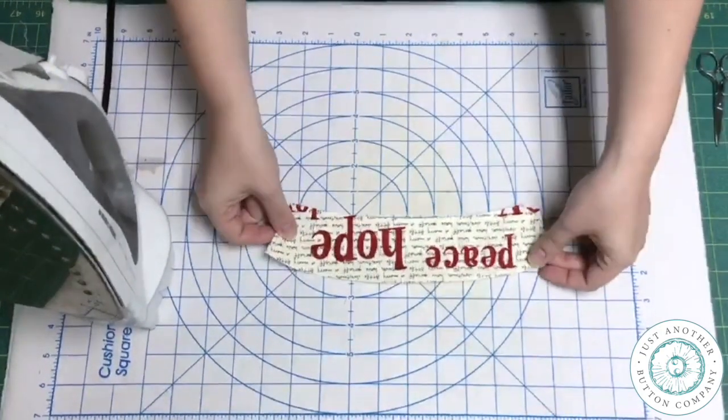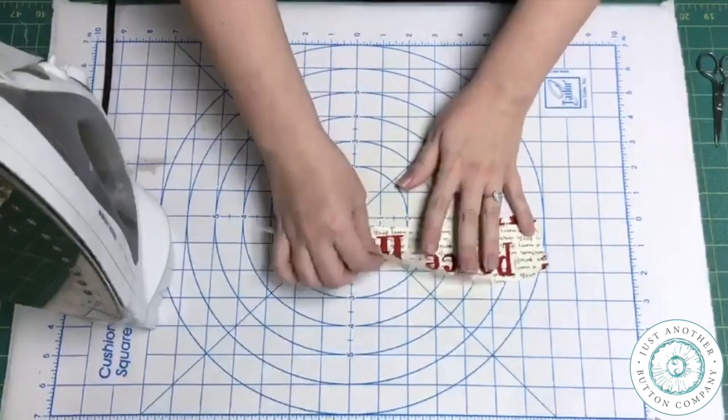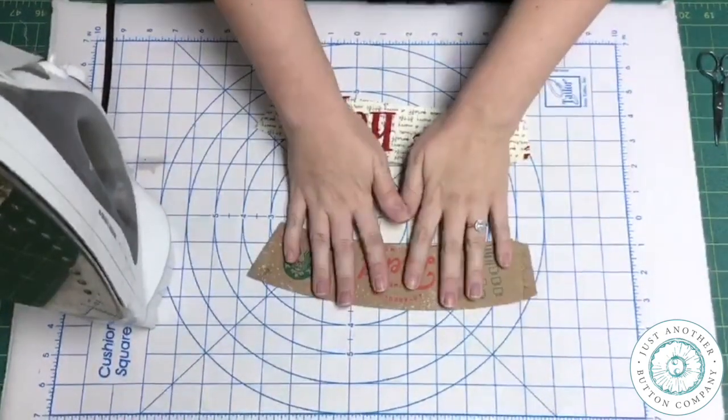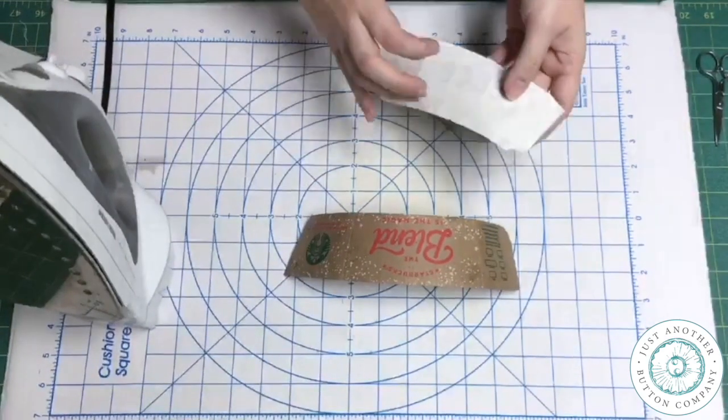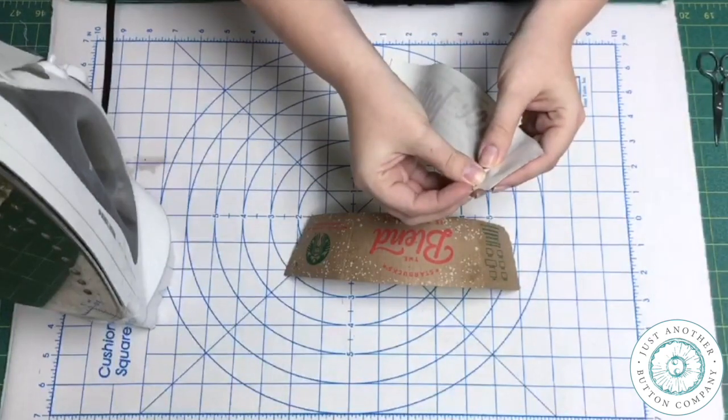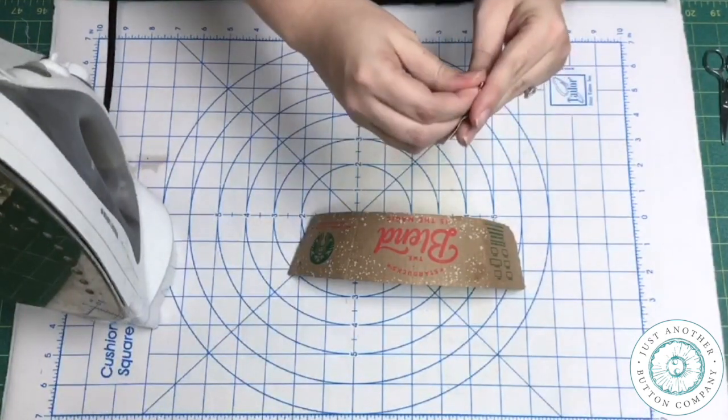Okay so now I have my fabric shape with fusible on the back and I have my open cardboard cup cozy. Now I'm going to fuse this fabric to the cardboard cup cozy. So I'm going to peel the paper off.